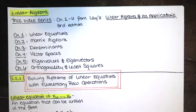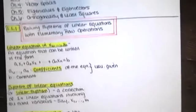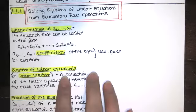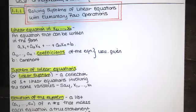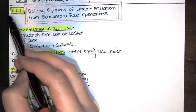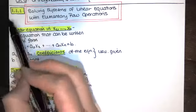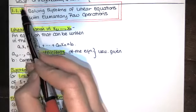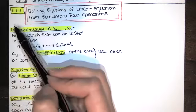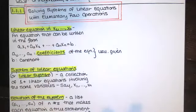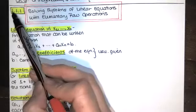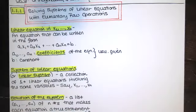This video is about solving systems of linear equations with elementary row operations, which is the very first topic in section one of the Lay Linear Algebra textbook. I'm using the same numbering convention as my other video series: 1.1 stands for chapter one, section one of the Lay textbook, and the last number indicates the video number within that section. So this is the first video over chapter one, section one.